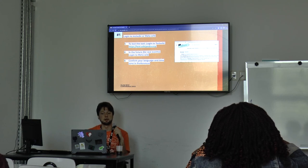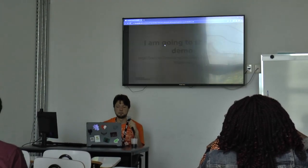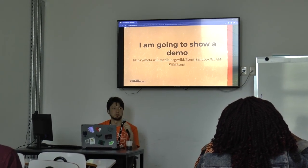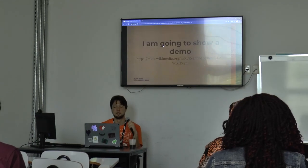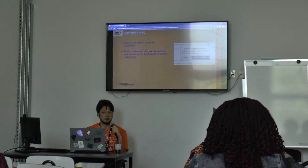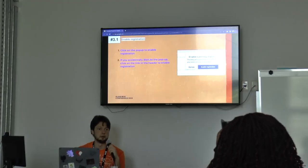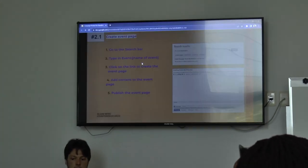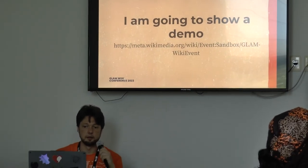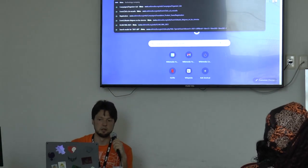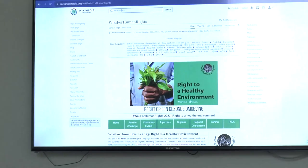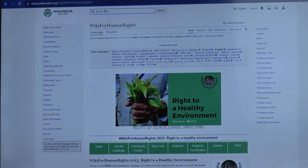So if you want to test the tool while I go through the demo, you can do that. I'm going to show you a draft event that we're going to create now on Meta as a demonstration, but I have all the steps documented in the slides, which you can find on the wiki. To create an event using this tool, you need to create a page in the event namespace on Meta.